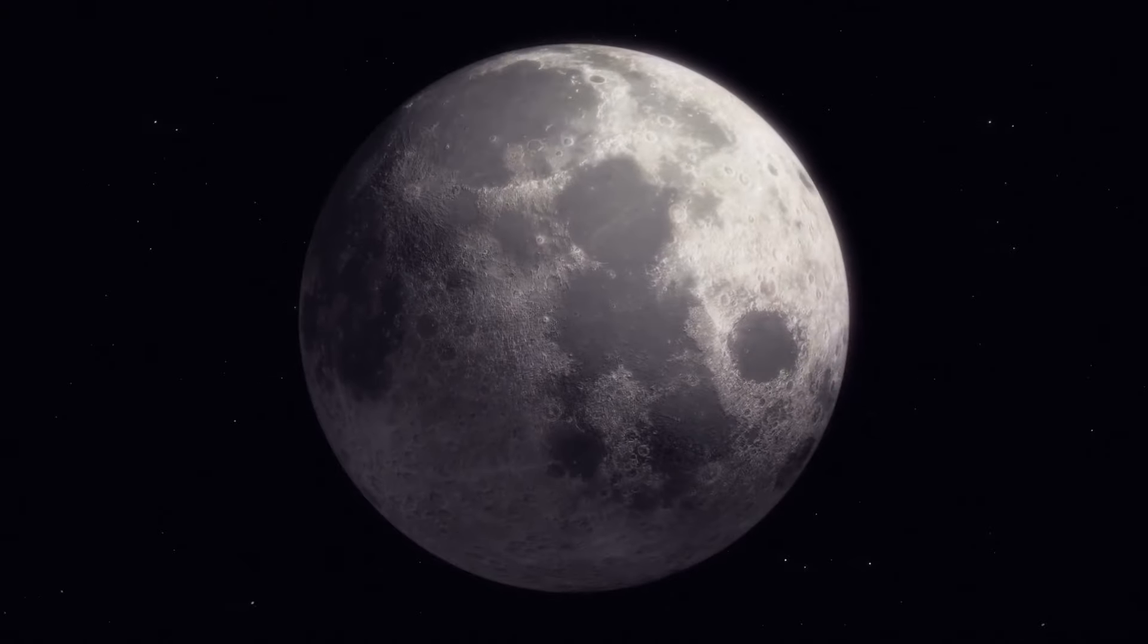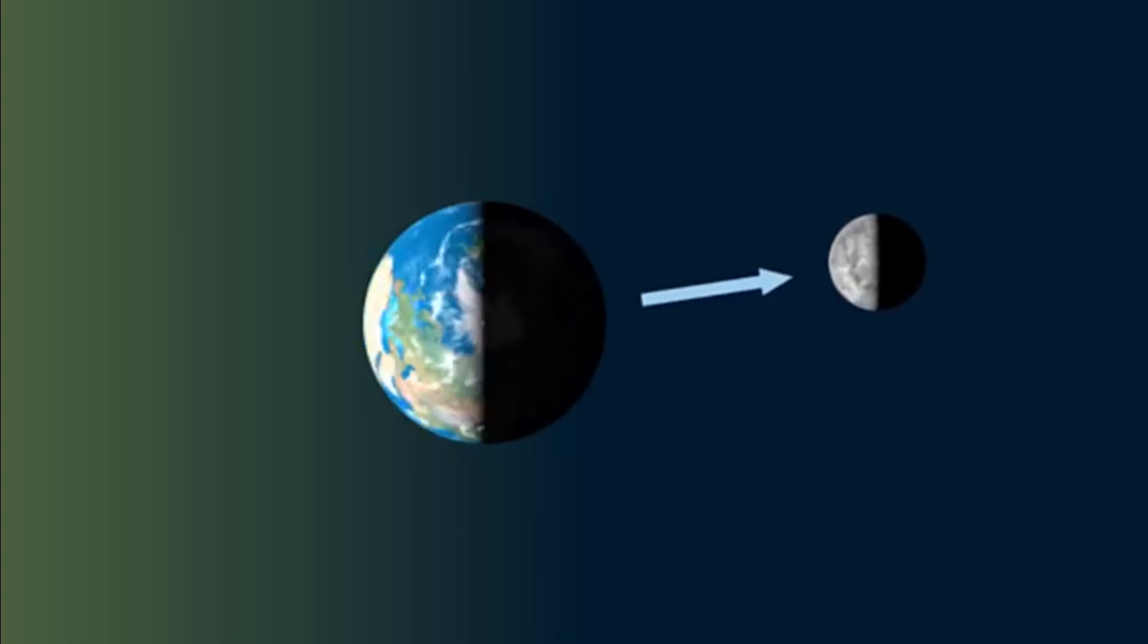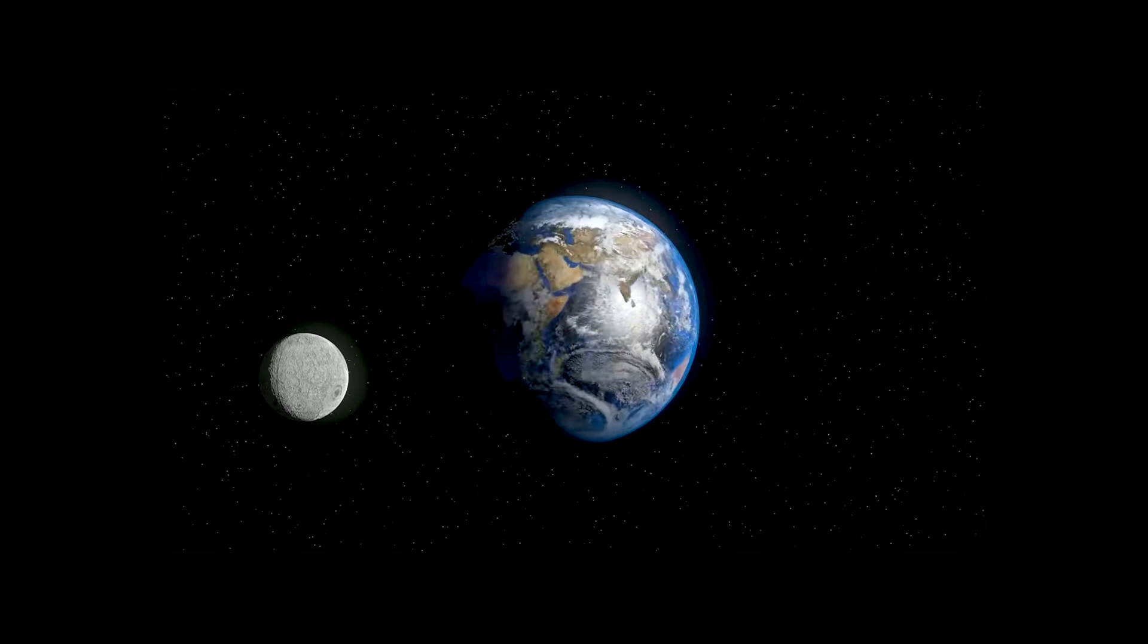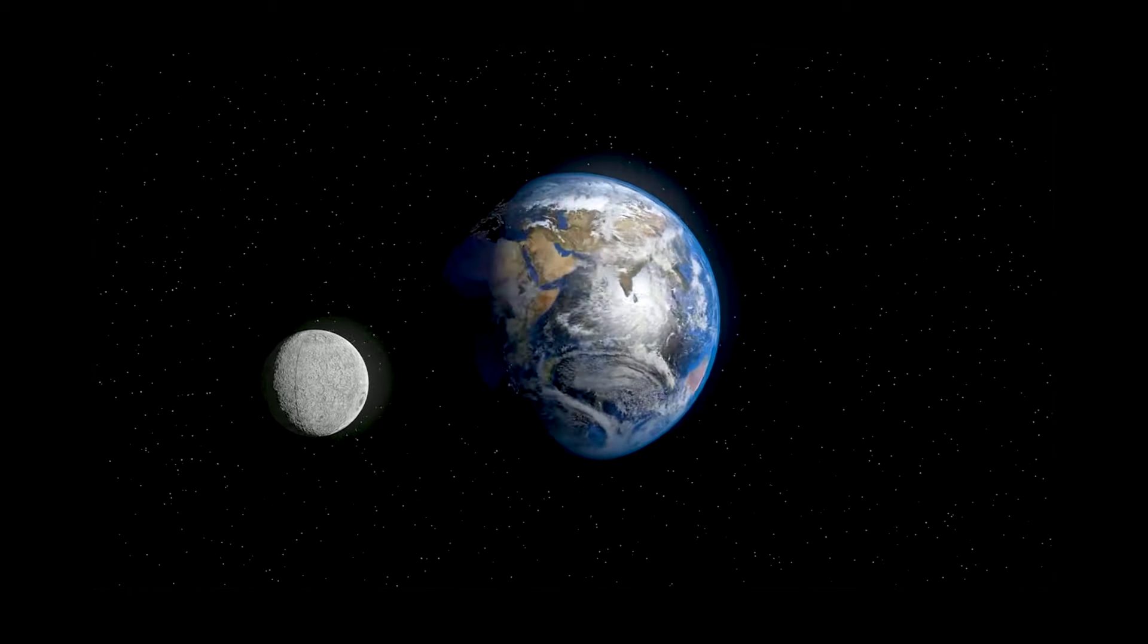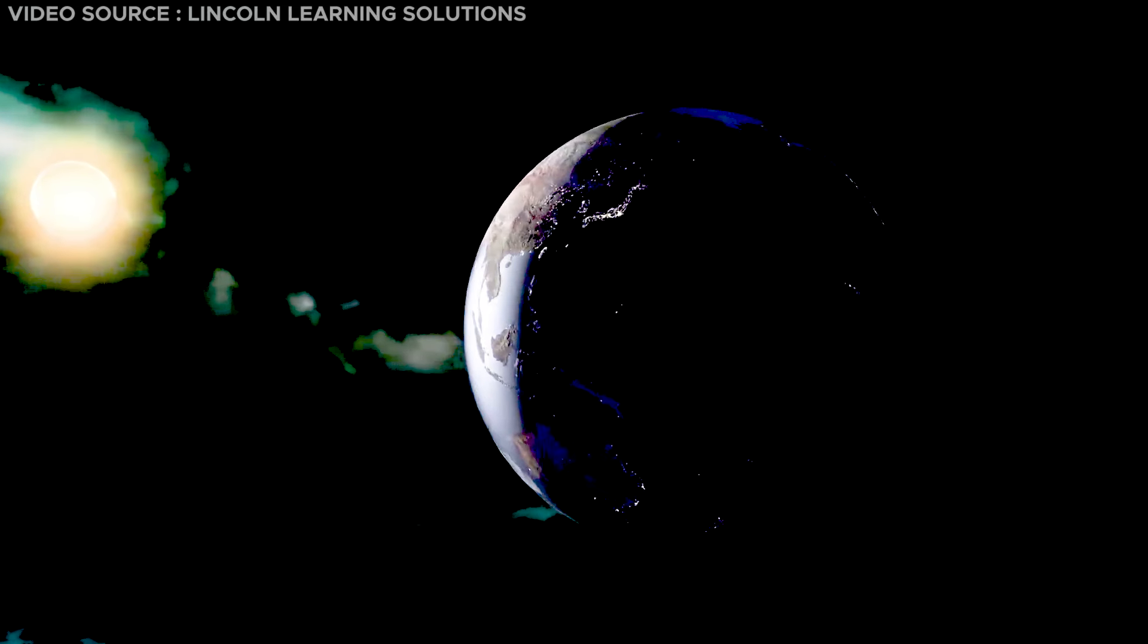Notably, the Moon, our natural satellite, stands out as the most consequential and enduring force affecting Earth's rotation. Over billions of years, the Moon's gentle gravitational pull has consistently tugged at the Earth, diminishing its rotational speed.